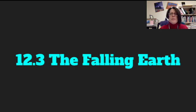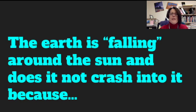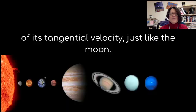What about the earth? Is it falling also? Yes, it is. The earth is falling around the sun, and it does not crash into it because of its tangential velocity, just like the moon. The planets also have tangential velocity, just like the moon, so that is why we don't go crashing into the sun. We are attracted to the sun, but we are going fast enough that we are constantly falling around a curve around the sun in our orbit.